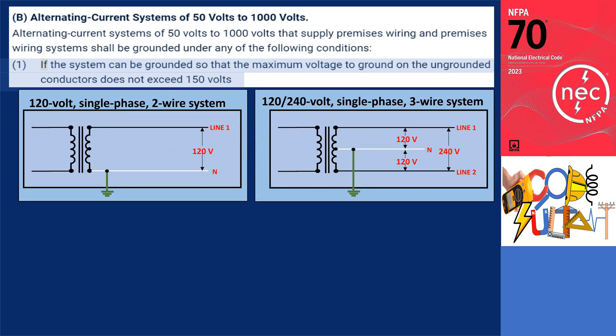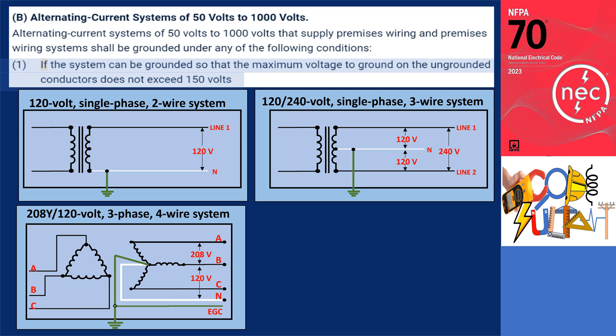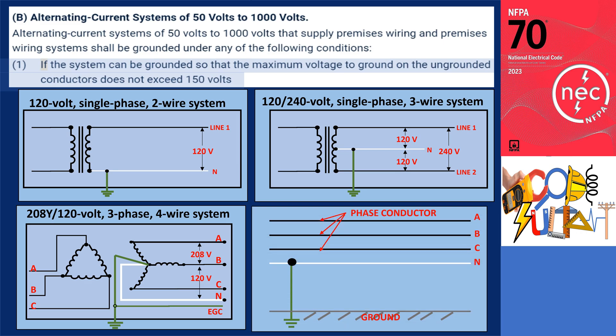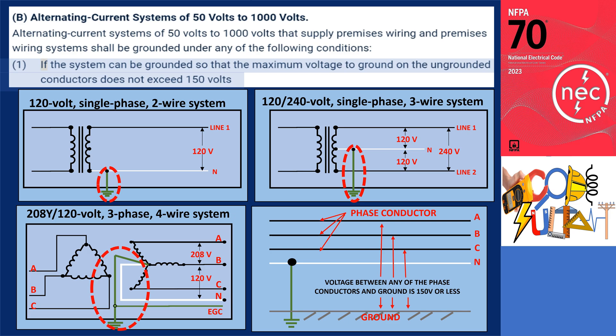The accompanying illustration demonstrates the grounding requirements outlined in section 250.20B1 for different system configurations. Specifically, it depicts the grounding requirements for a 120-volt, single-phase, two-wire system and a 120/240-volt, single-phase, three-wire system. Additionally, it showcases the grounding requirements for a 208Y/120-volt, three-phase, four-wire system. In all of these shown systems, it is necessary to ground the neutral conductor, because when the neutral conductor is grounded, the maximum voltage to ground does not exceed 150 volts from any other conductor within the system.